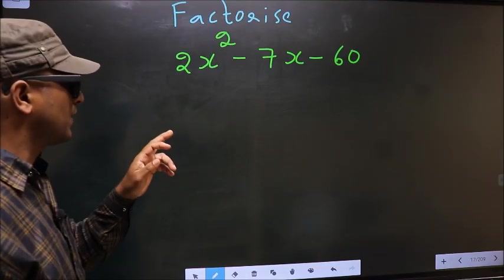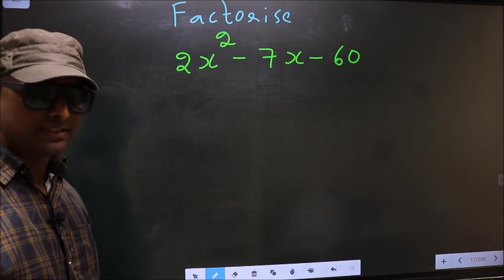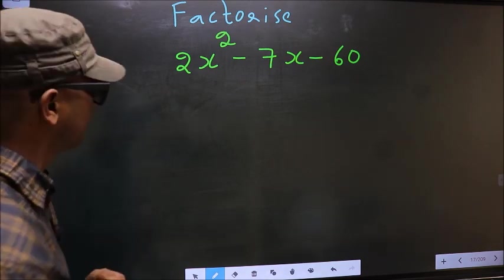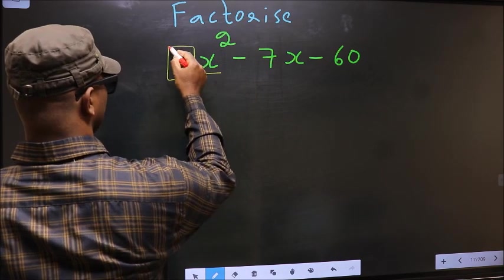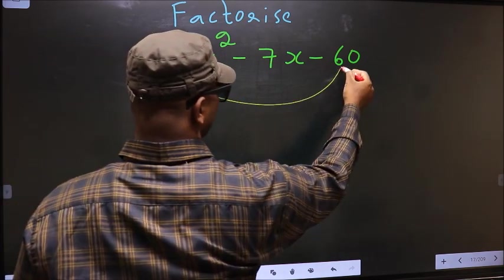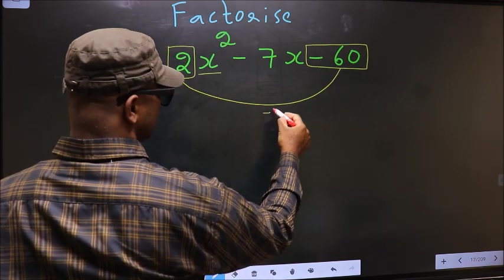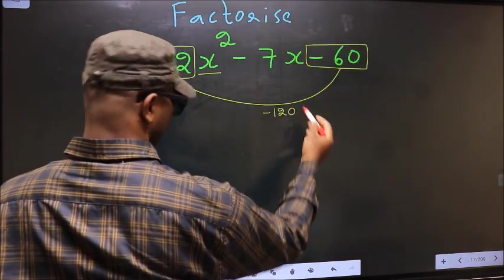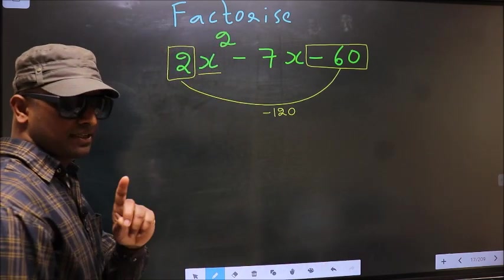Factorize 2x² - 7x - 60. To factorize, step 1: the coefficient of x² (which is 2) should be multiplied by the constant (which is -60). So 2 times -60 equals -120. This is your step 1.